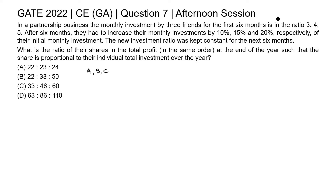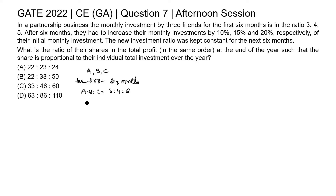The ratio of monthly investment of A, B, and C is 3:4:5, and they invested in this ratio for the first six months. So for the first six months, the ratio of investment of A, B, C is 3:4:5. Let's suppose the investment of A is 300, B is 400, and C is 500, and this is for the first six months.